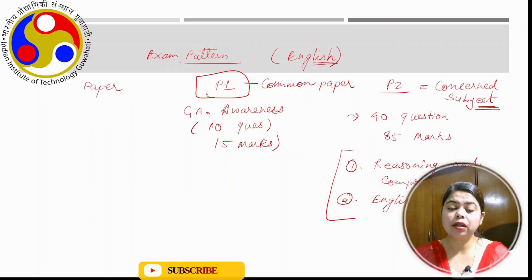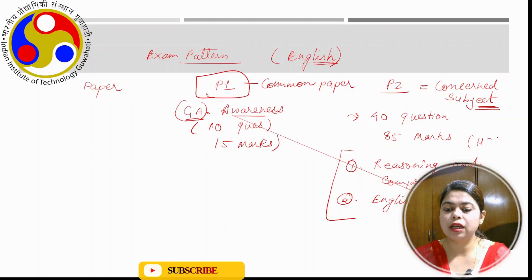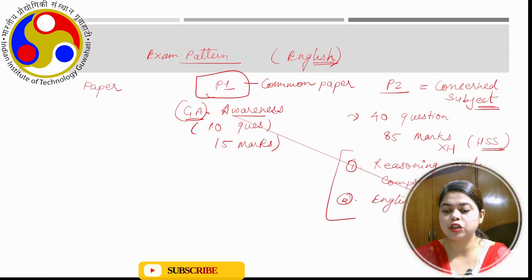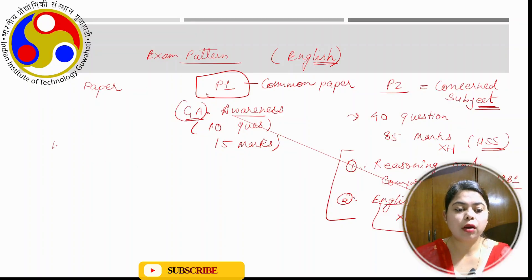There is negative marking as well, and paper codes are assigned. For general awareness, the paper code is GA. For humanities and social sciences, the code is XH. For reasoning and comprehension, the code is B1. For English literature, the code is XH-C2. C2, as I already mentioned, is for English literature.